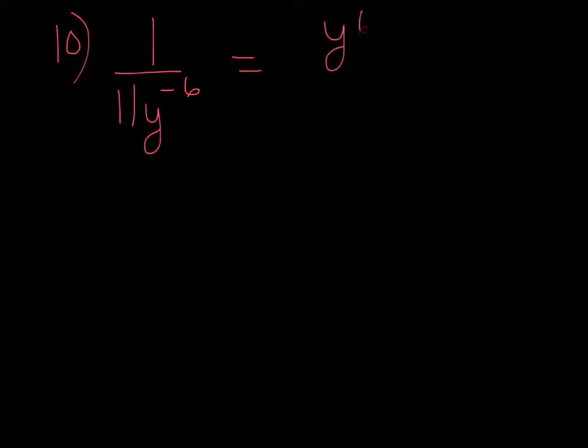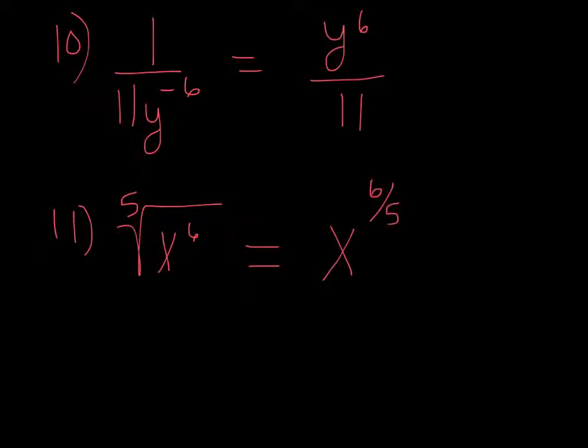Number 10. Simplify the expression completely and we're given 1 over 11y to the negative 6. So what they mean by this is we just need to get rid of the negative exponent. So we bring it up to the top, the 11 stays down because it doesn't have an exponent. Number 11, we want to write the 5th root of x to the 6 using rational exponents. So the 6 is going to be your top number, 5 the bottom number.